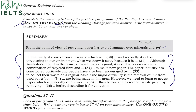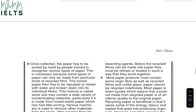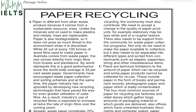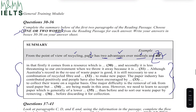The first one has already been done for us. It says: from the point of view of recycling, paper has two advantages over minerals and something. So 'paper' is my keyword — it has two advantages over minerals, and a dash is another thing. Going to the paragraph, it says: paper is different from other waste produced because it comes from a sustainable resource — trees. Unlike the minerals and oil used to make plastics and metals, trees are replaceable. So the summary paraphrases it: paper has two advantages — it is better than minerals and oil.